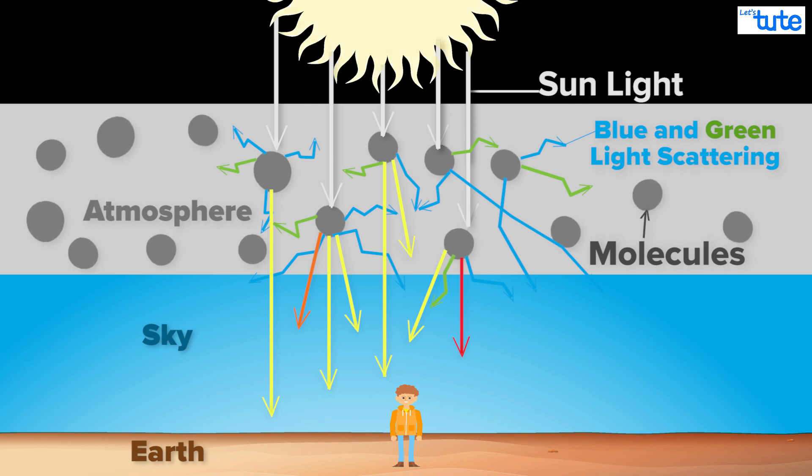Thus, you see the sun as yellow, while the sky looks blue because of the scattered blue light coming to your eye.